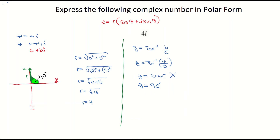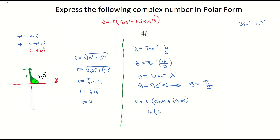So we put that into the polar form. In radians, 90 degrees is the same as π/2 — remember that 360 degrees equals 2π. The final answer is: Z equals 4 times cos 90 degrees plus i sin 90 degrees. In radians, that's 4 times cos(π/2) plus i sin(π/2). And that's the complex number expressed in polar form.